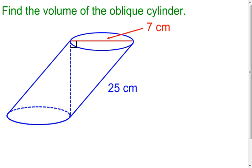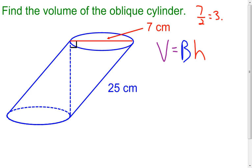My last one is an oblique cylinder. All the other problems were right cylinders or right prisms. Remember, finding the volume of an oblique cylinder or oblique prism is no different than finding the volume of a right one — take the area of the base and multiply it by the height. My base is a circle again; the diameter is 7, so the radius is 3.5. I'll put that in: pi times 3.5 squared. But I still need to find the height of the cylinder.